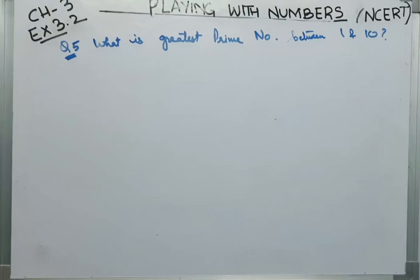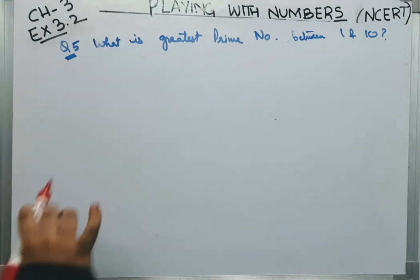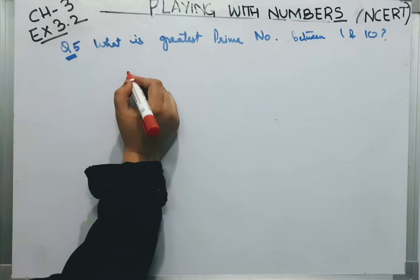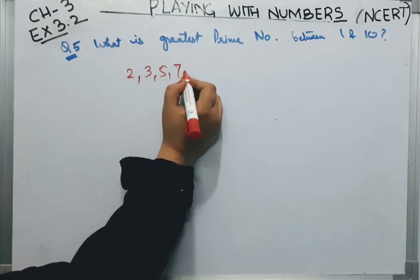Now, question number 5 is, what is the greatest prime number between 1 and 10? 1 or 10 ke beech me, which is the prime number which is the greatest value? Sabse bada kaunsa prime number? So, what we will do here is, we will write the prime number between 1 and 10. 2 is the prime number, 3, 5, 7.